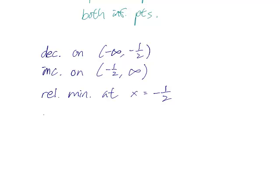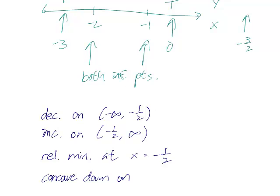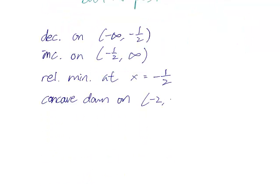It's concave down on, let's go back to the sign chart, between minus 2 and minus 1. So the interval minus 2, minus 1. It's concave up on minus infinity to minus 2, and minus 1 to infinity.